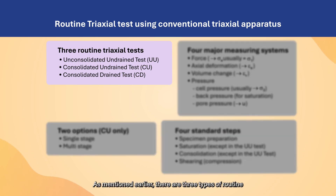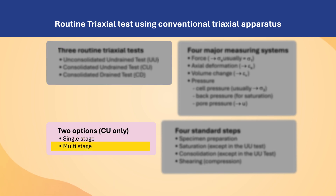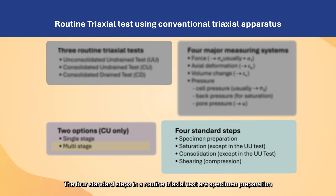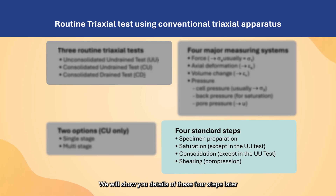There are three types of routine triaxial tests: the UU, CU and CD test. For the CU test there are two options, either a single stage or a multi-stage test. More discussions on this can be found in video 8b. The four standard steps in a routine triaxial test are specimen preparation, saturation of the soil specimen, consolidation of the specimen, and finally shearing.